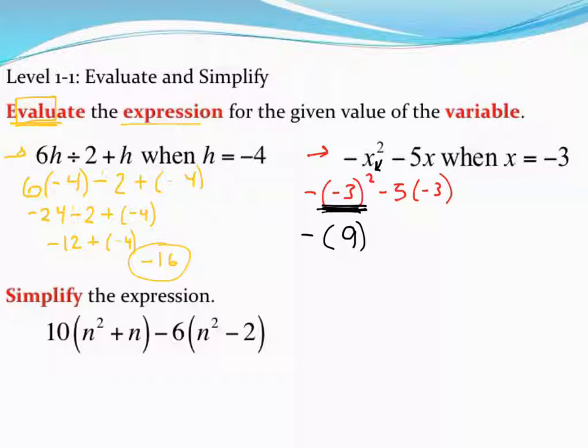Which it shouldn't because then you have the negative in front. So just be careful that you're using parentheses around that negative 3 right there. Otherwise, just ask yourself, what's negative 3 times itself? And then that negative is kind of coming straight down.